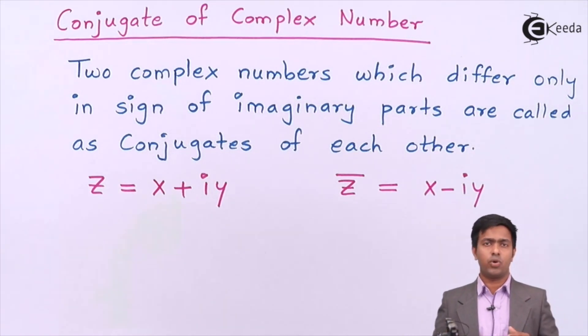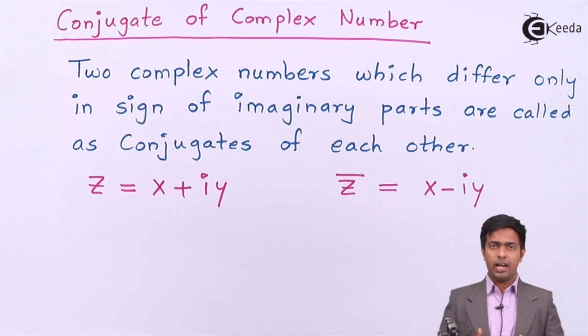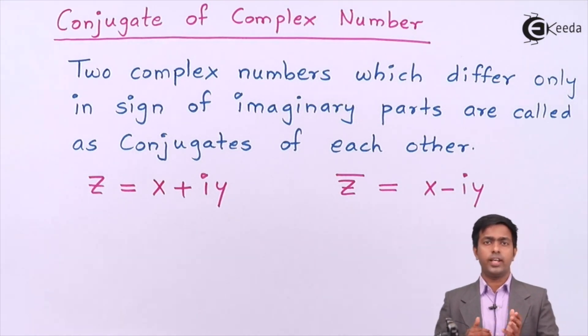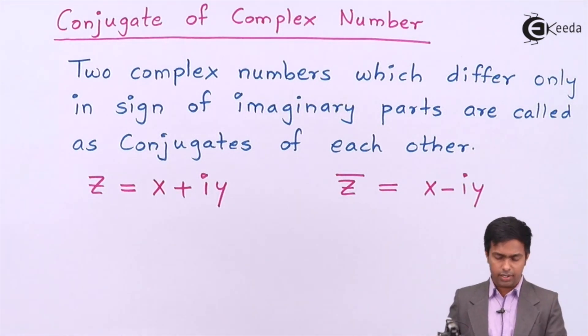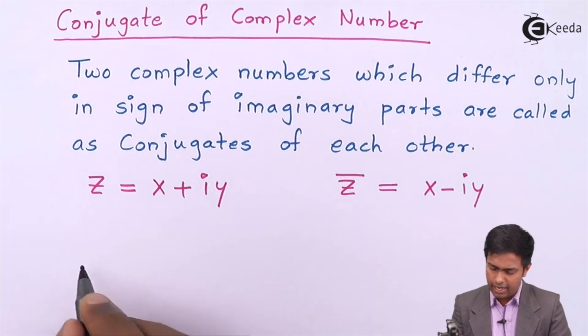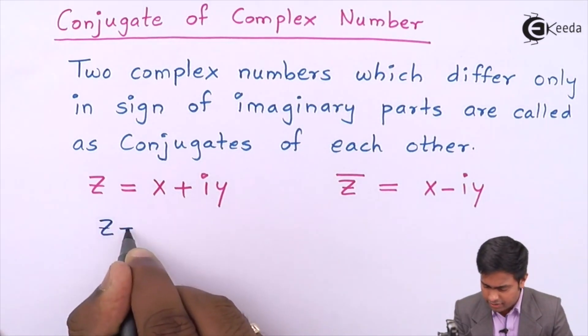Now let's understand the operations based on the conjugate of complex number. If I want to add two complex numbers which are conjugate of each other, then the addition of those two complex numbers is always a purely real part. If I add z with z̄...